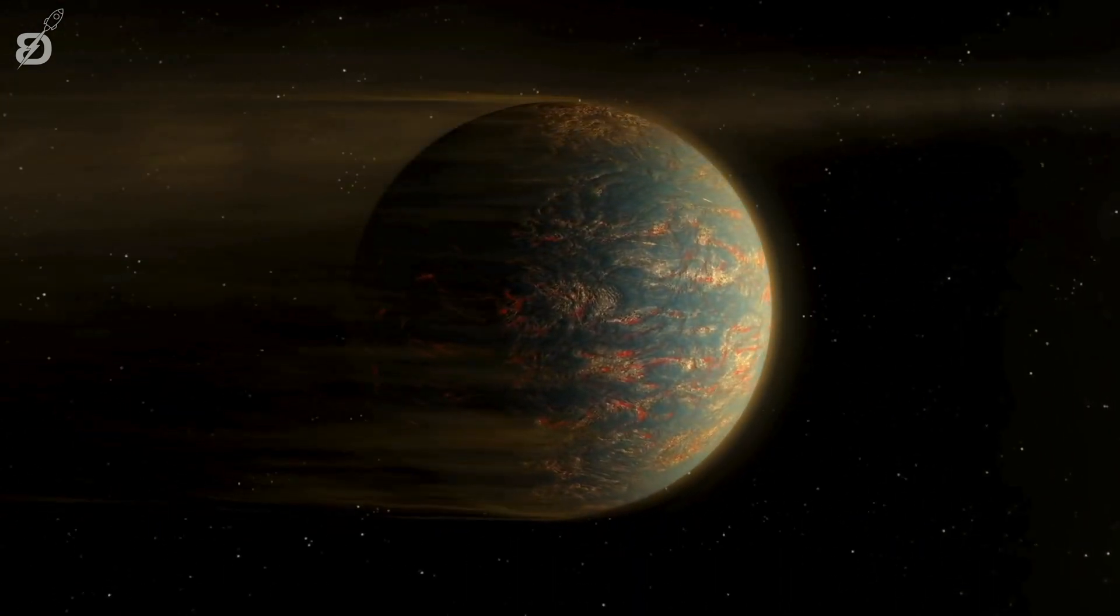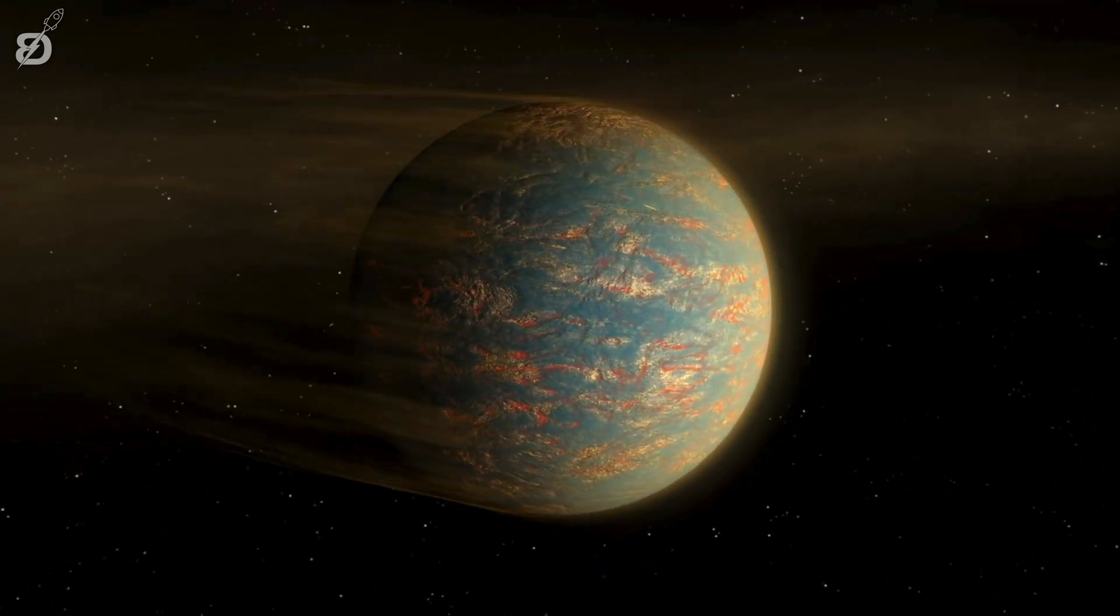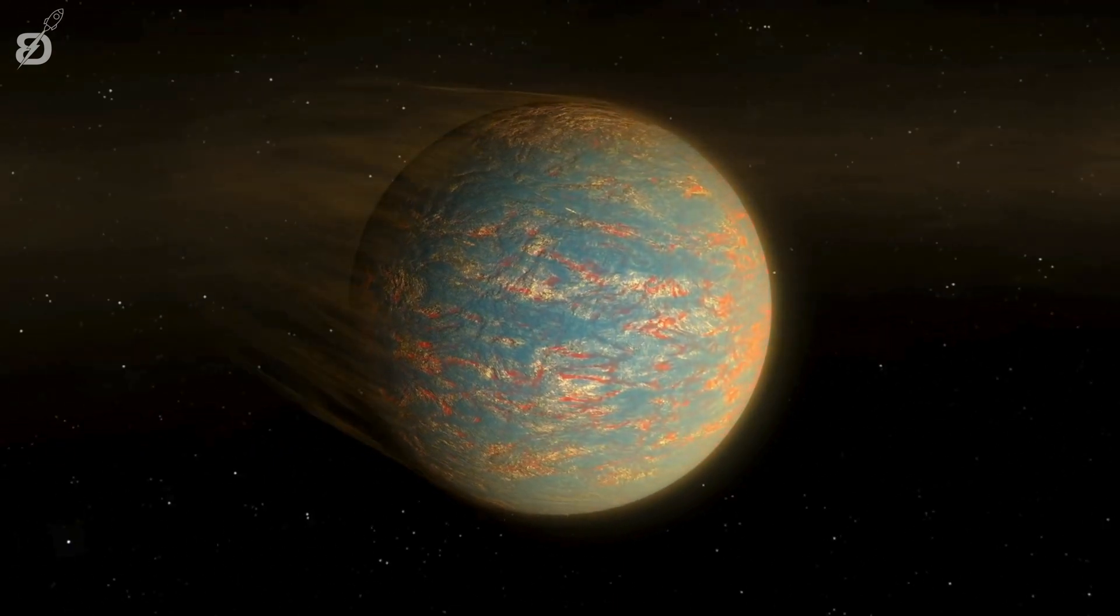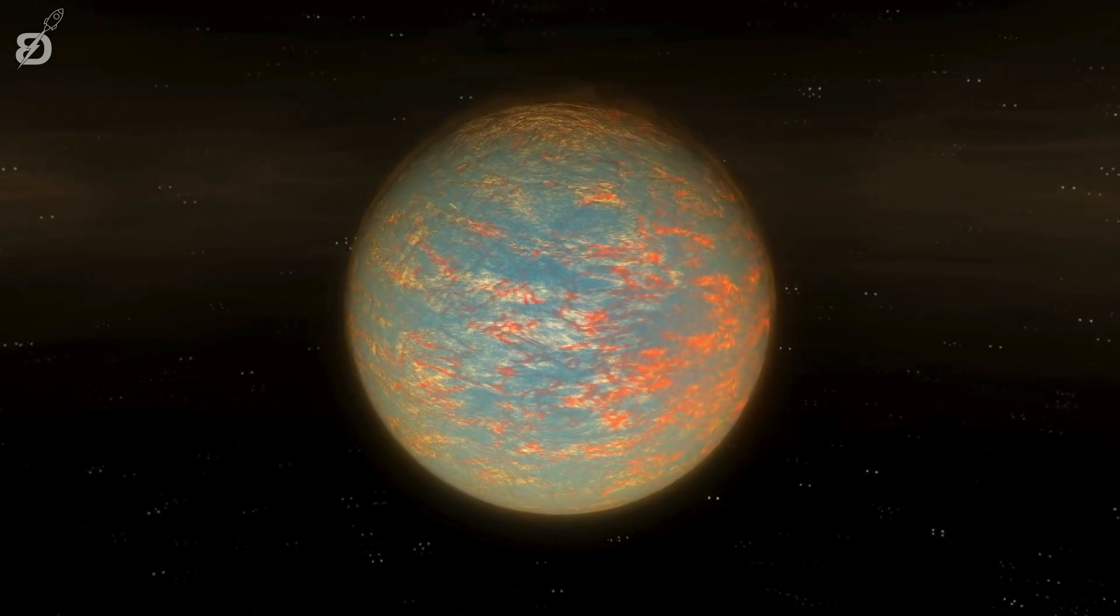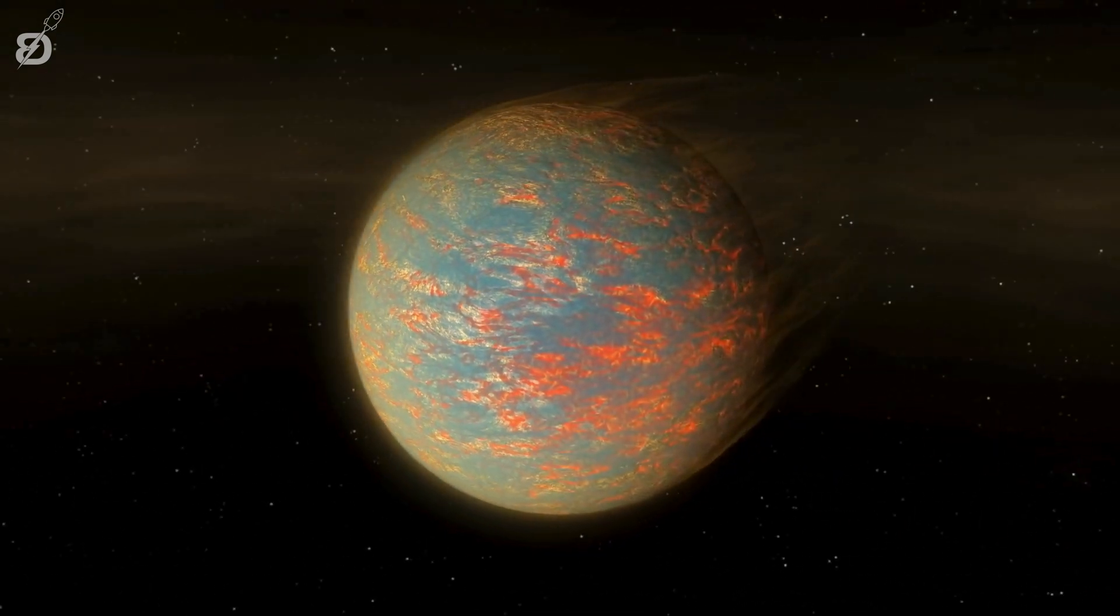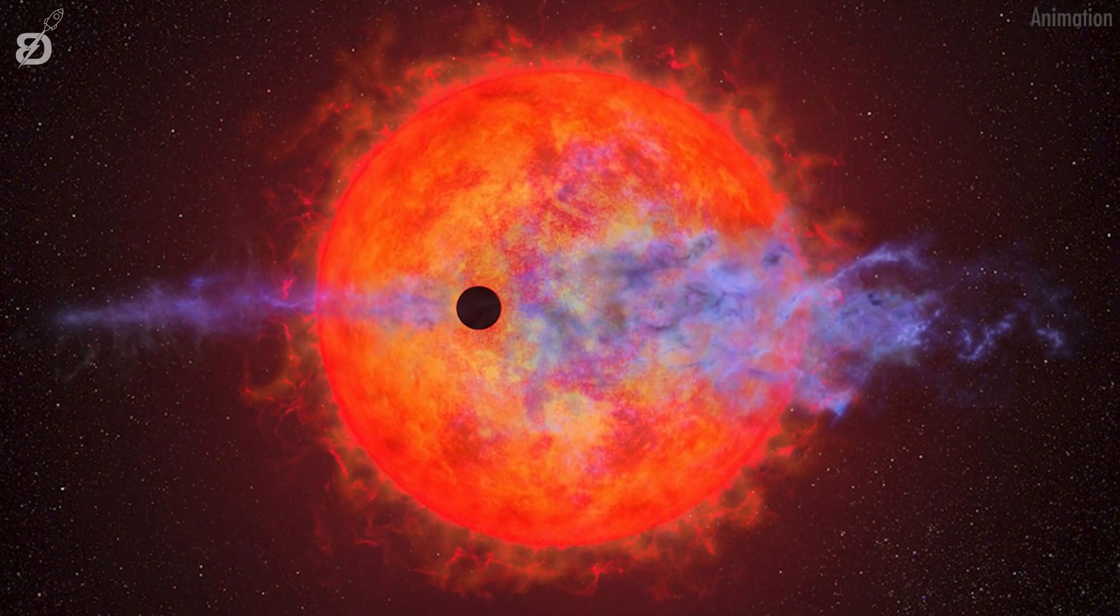The planet is so close to its parent star, at less than 2% of the distance between Earth and the Sun, that it makes a complete orbit in just 17 hours. This sets up some rather extreme conditions on the planet that have defied explanation.